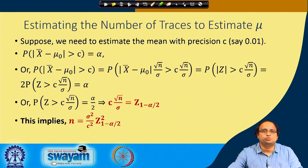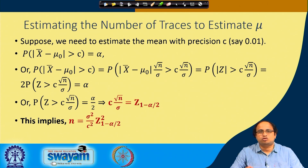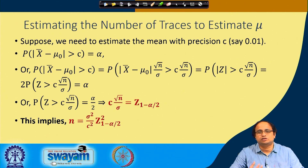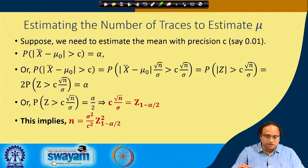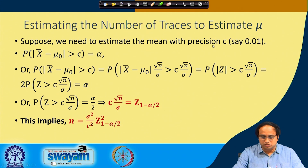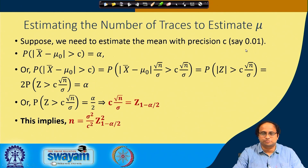If you remember, we have essentially a standard normal distribution through which we are trying to use its quantiles to estimate the mu in our normal distribution. We are transforming that into a z-statistic and from there we are trying to estimate it. The idea is that if you want to estimate the mean with precision c — so this c could be say 0.01 or 0.001 — that depends upon the amount of accuracy that you would like.